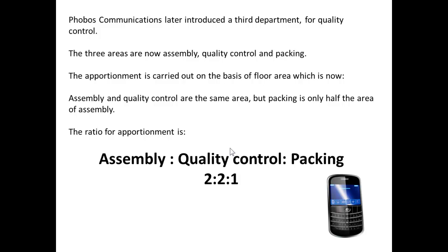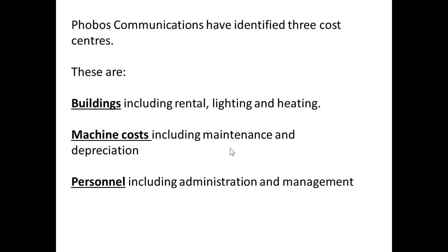Now that was a very simple example — it gets more complicated. Phobos Communications later introduced a third department for quality control, so they now have three areas: assembly, quality control, and packing. The apportionment is based on floor area with a ratio of 2 to 2 to 1 for assembly, quality control, and packing. They've identified three cost centres: buildings (including rental, lighting and heating), machine costs (maintenance and depreciation), and personnel (administration and management).